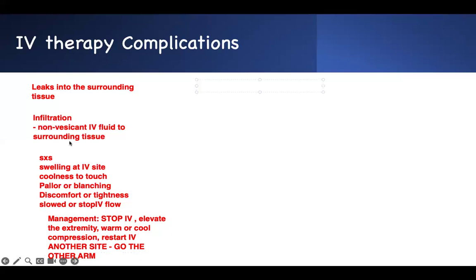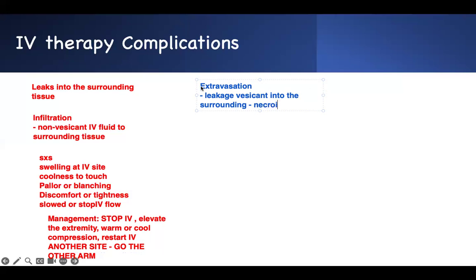The opposite is extravasation. If you know infiltration, you will know extravasation. What is the difference? The leakage is of a vesicant into the surrounding tissue — that's different. And this can lead to necrosis. Because of that, you need an incident report for extravasation. This has to be reported. Infiltration does not need to be reported.